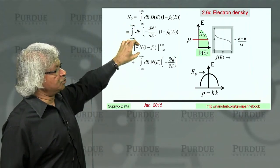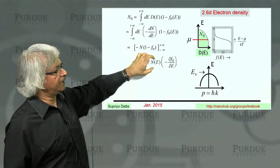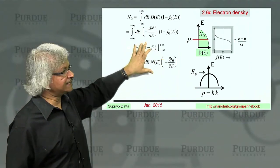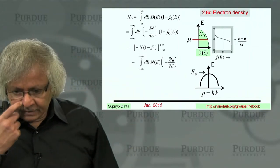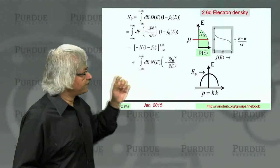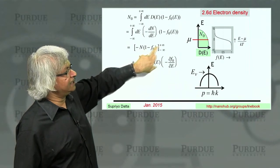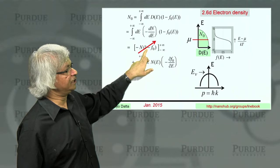And you will get these two terms. There will be N times 1 minus F0, and then there will be another term which will be N times dF0 dE. So this is exactly the same integration by parts that we did in the last slide. But one very important point I want to make is that this N times 1 minus F0 is a quantity that vanishes at both ends, so you can actually ignore it.